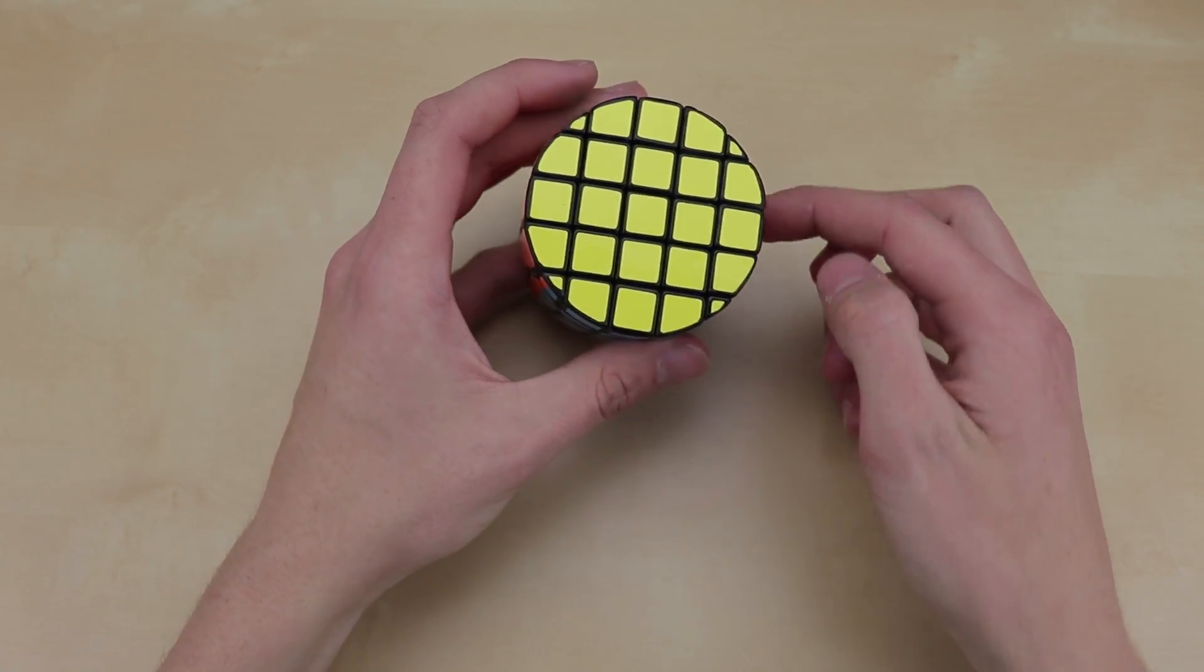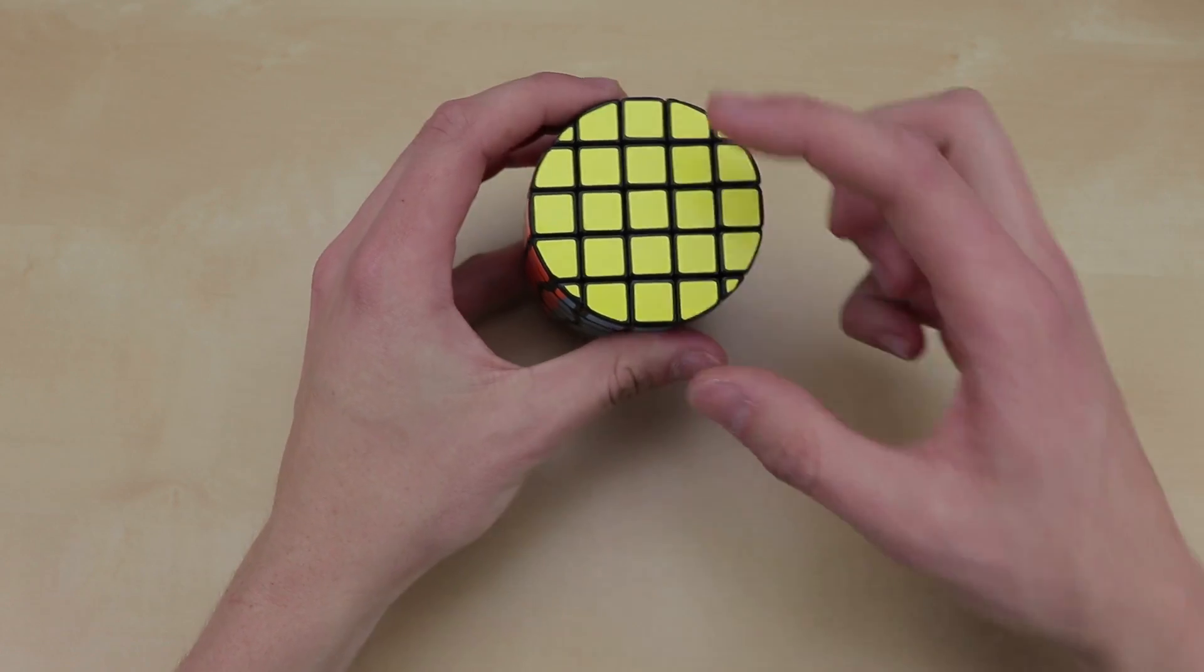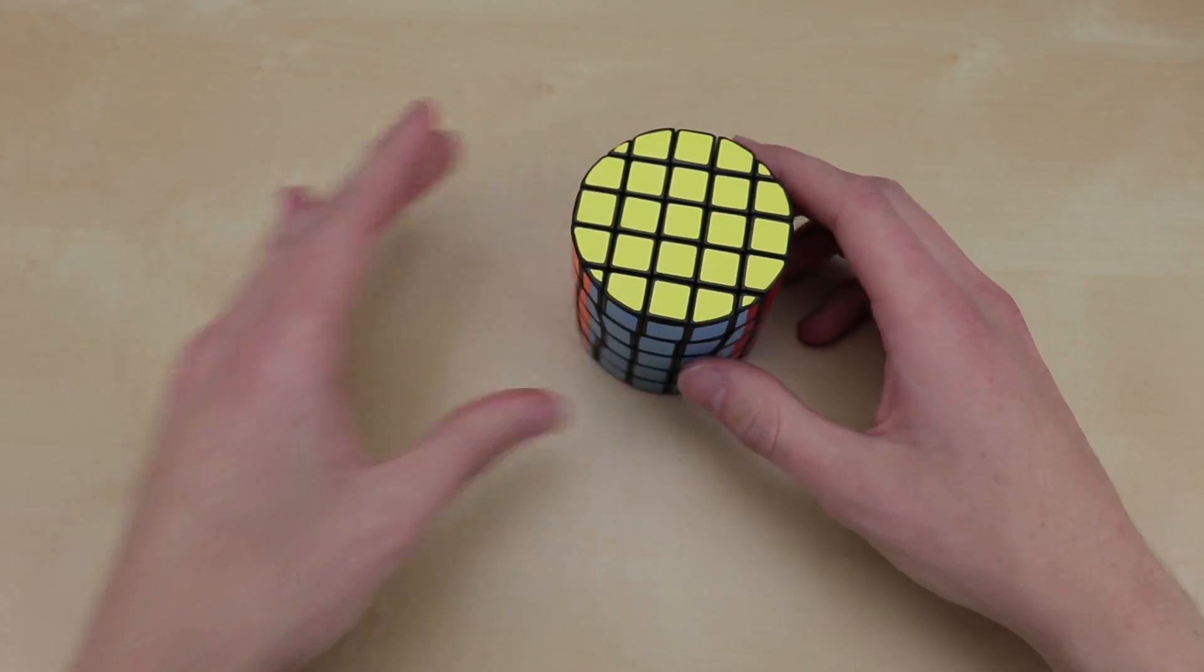But basically what we're going to do is measure the outside of the cube in the number of cubies, and then divide that by 5 because that's the number of cubies going on the diameter. And then we should have Pi.